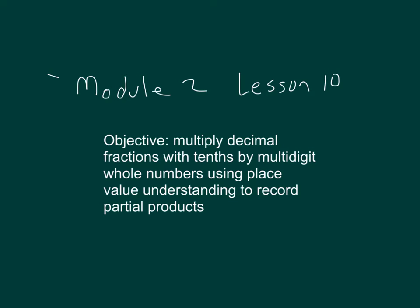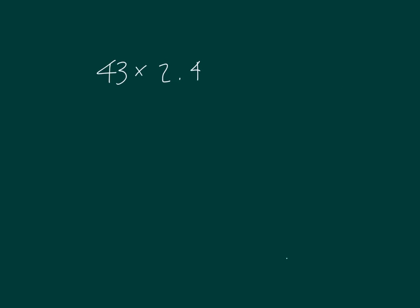The objective within this lesson is to multiply decimal fractions with tenths by multi-digit whole numbers. Here we have 43 times 2.4.